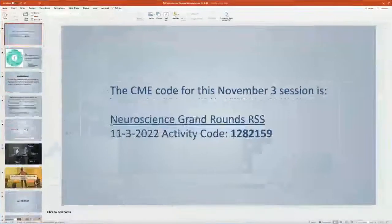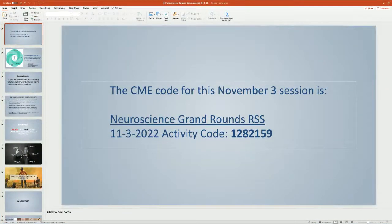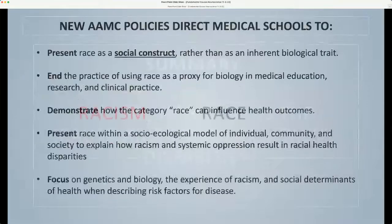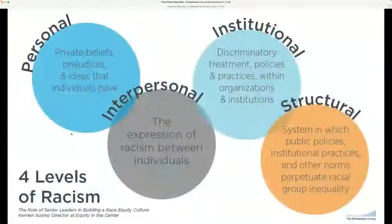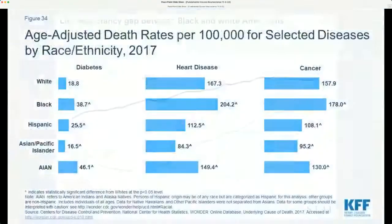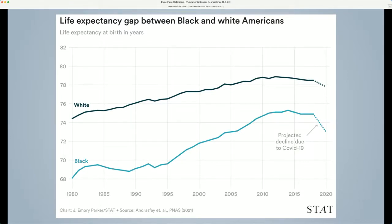Sorry about the technical interruption — we're back. A recent study estimates an increase of nearly 40% in the black-white life expectancy gap, from 3.6 years to over five years, thereby eliminating progress made in reducing this differential since 2006. Latinos, who have consistently experienced lower mortality than whites — a phenomenon known as the Latino or Hispanic paradox — would see their more than three-year survival advantage reduced to less than one year.